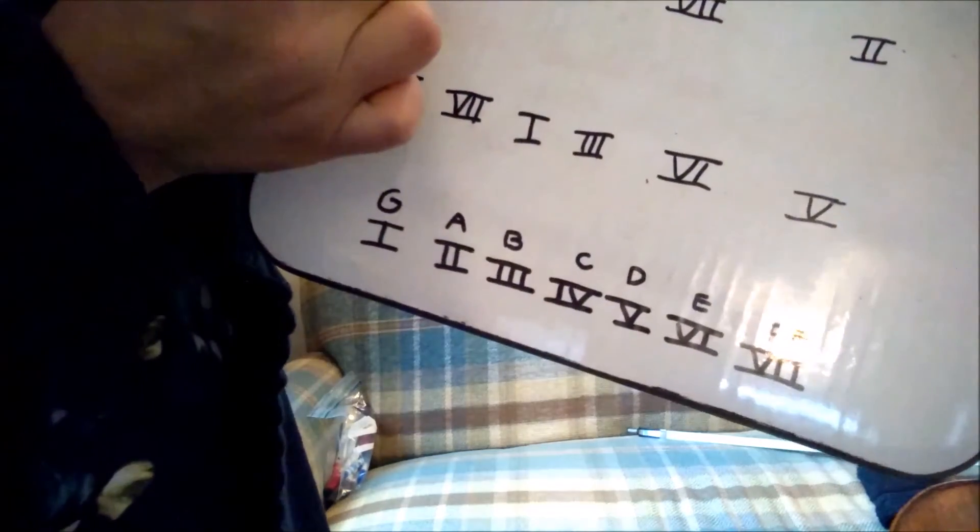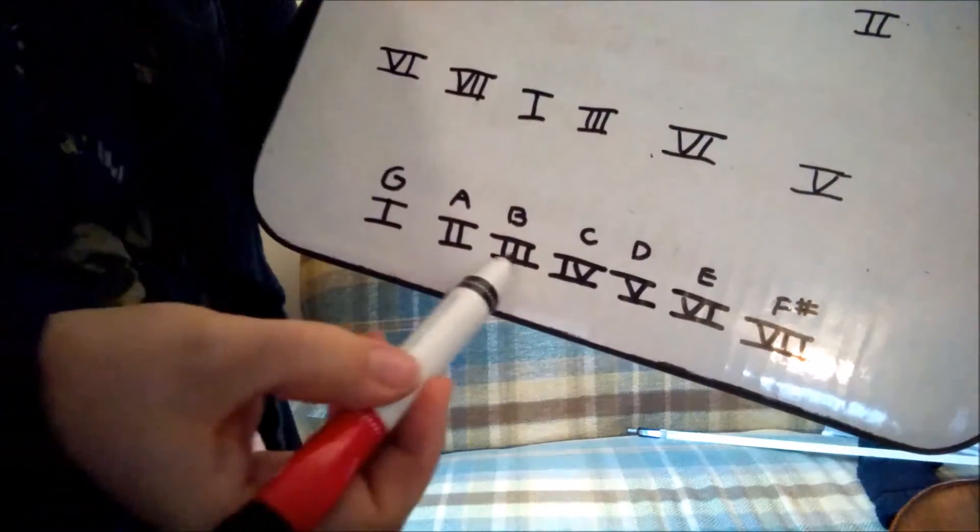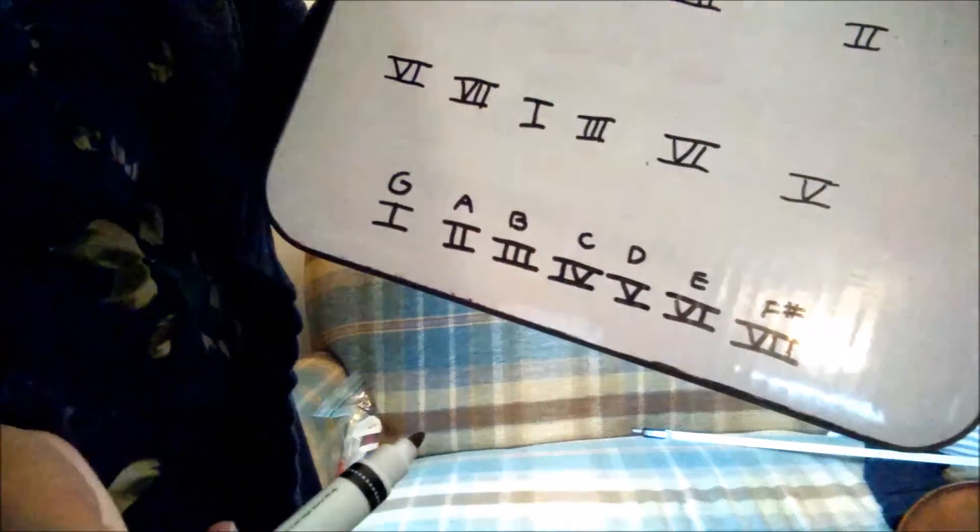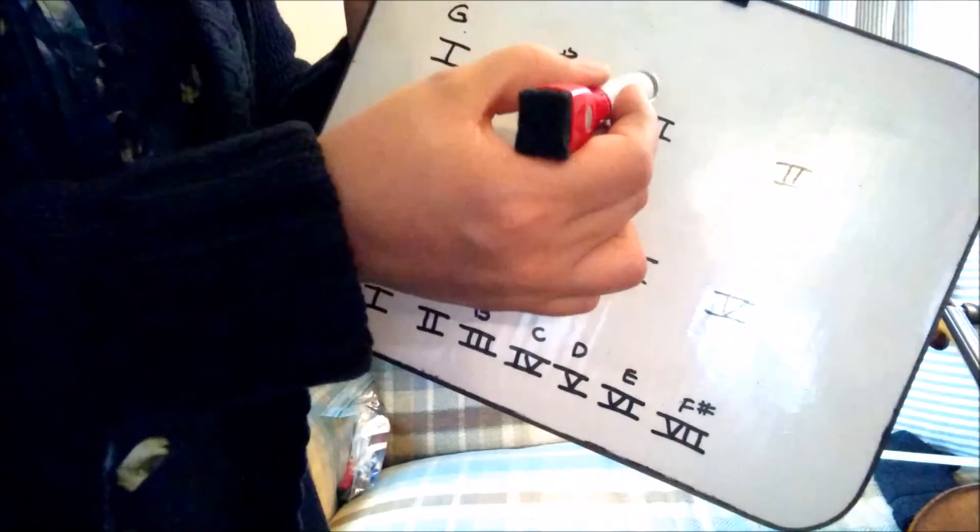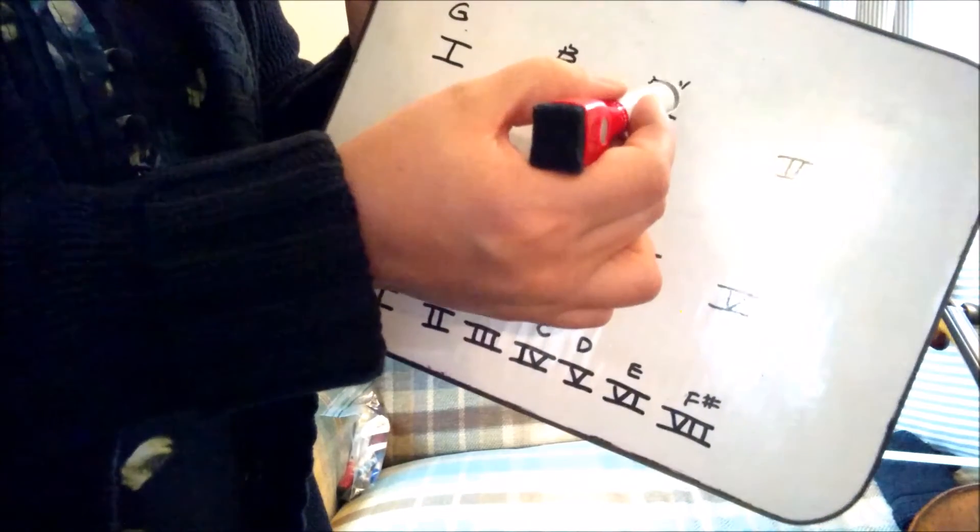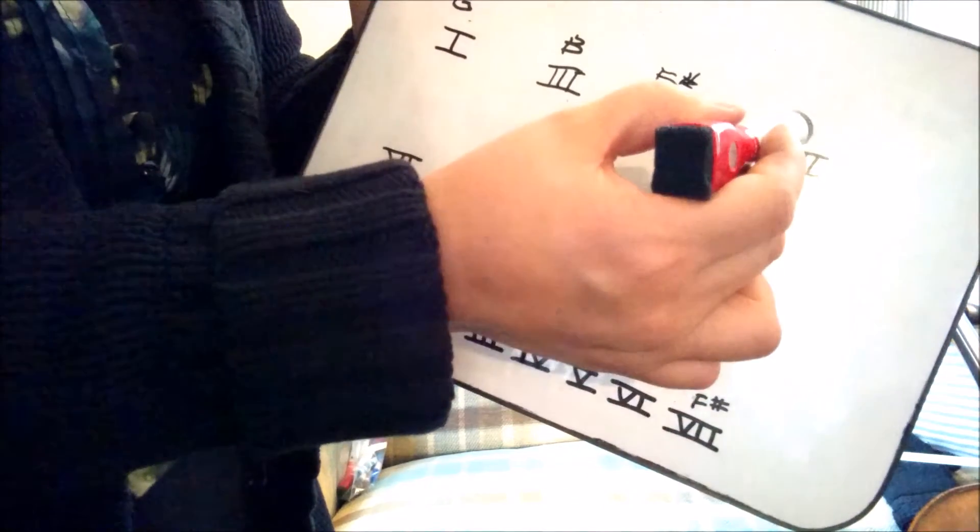We got 1, that's G, 3, that's B, 7 is F sharp, 2 is A.